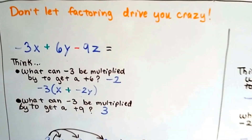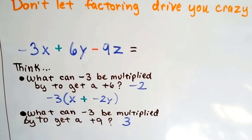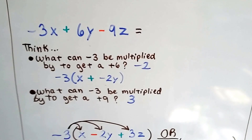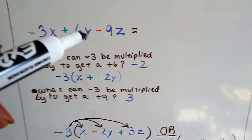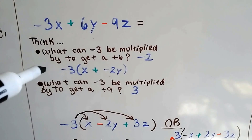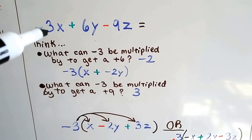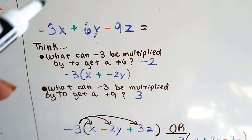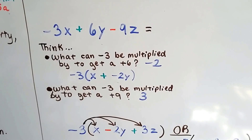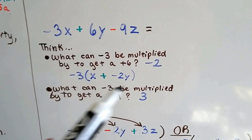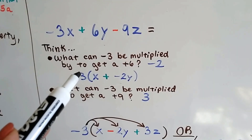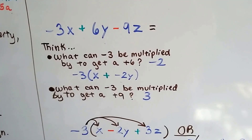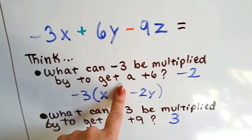Now don't let factoring drive you crazy — there are a couple of different ways to do this and a lot of people get confused. This is the most important part of this video. If we've got negative three x plus six y minus nine z, we think to ourselves: what can negative three be multiplied by to get this positive six? What do you multiply a negative by to get a positive? Another negative. So we put negative three on the outside of the parentheses and multiply it by a negative two — that's going to get us that positive six.